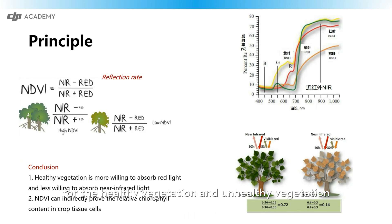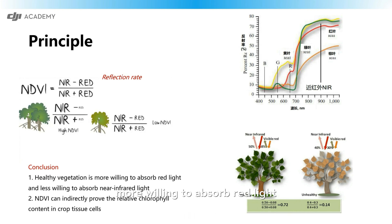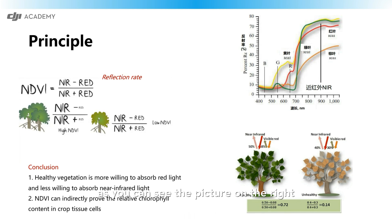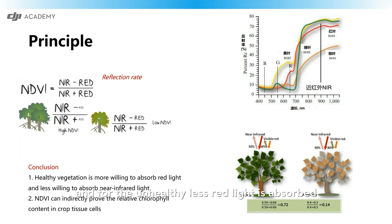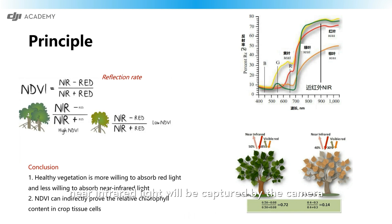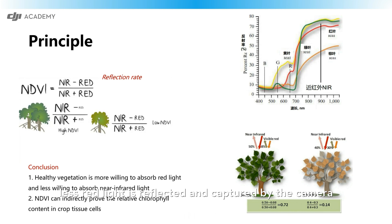For healthy and unhealthy vegetation, the NDVI can be totally different. Healthy vegetation absorbs more red light and less near-infrared light — as you can see in the picture on the right, healthy crops absorb more red light, so less red light is reflected. For unhealthy vegetation, less red light is absorbed and more is reflected. The reflected red light and near-infrared light are captured by the camera, so healthy vegetation gets a high NDVI value.